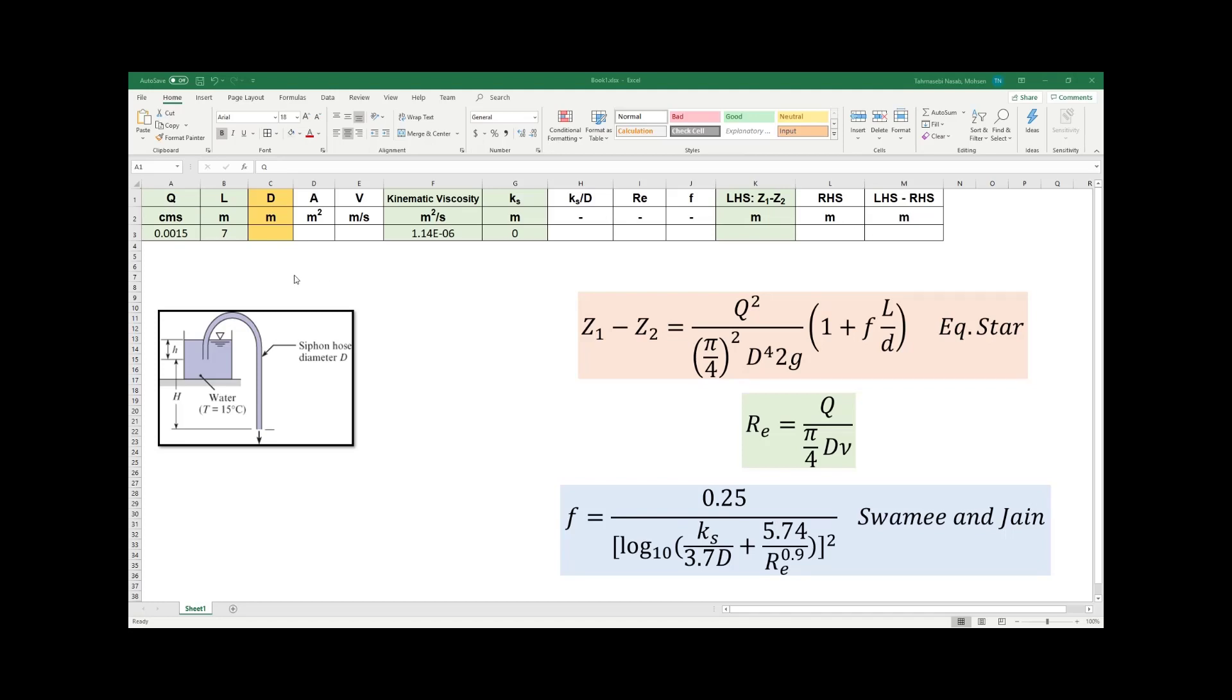In the table that I've set up, all the variables that I have the value of are in green. For example, I had the value of Q or flow rate in liters per second. I converted this to cubic meters per second by dividing it by 1,000. D is the value of diameter, which I don't have and need to find. Area, velocity, and all the other values are what I need to calculate. You need to set up your Excel sheet like this - all the variables I have listed are here. Notice that I have two variables called LHS and RHS - left-hand side and right-hand side of equation star.